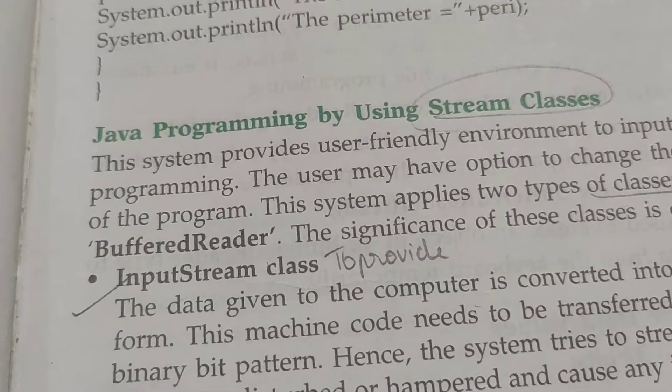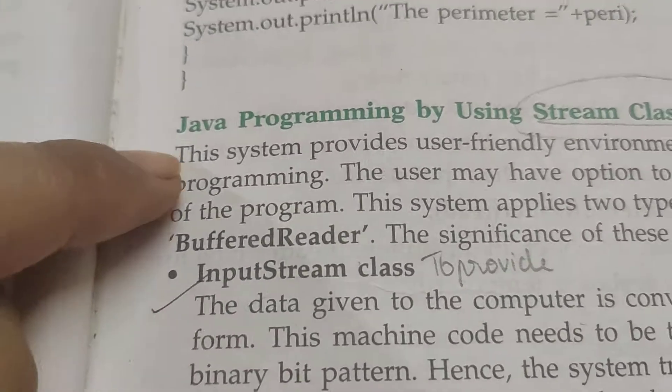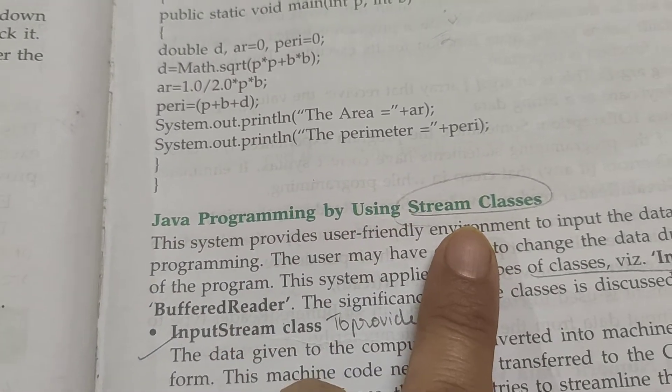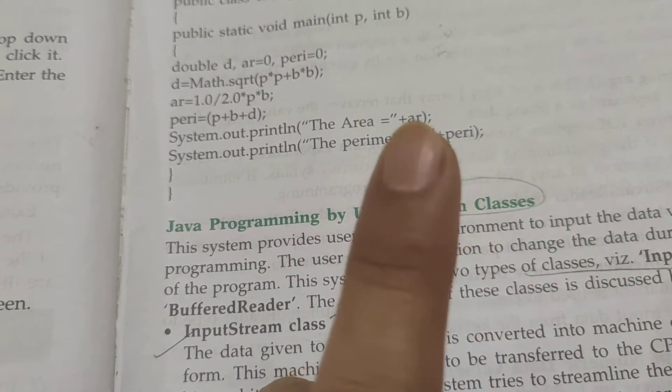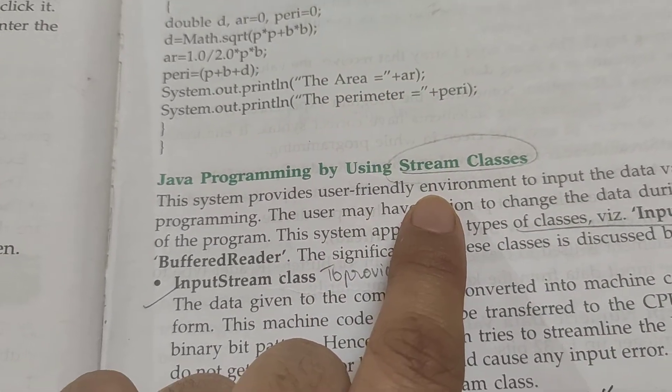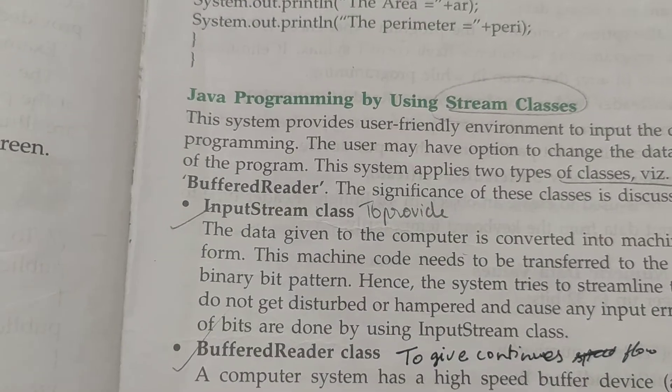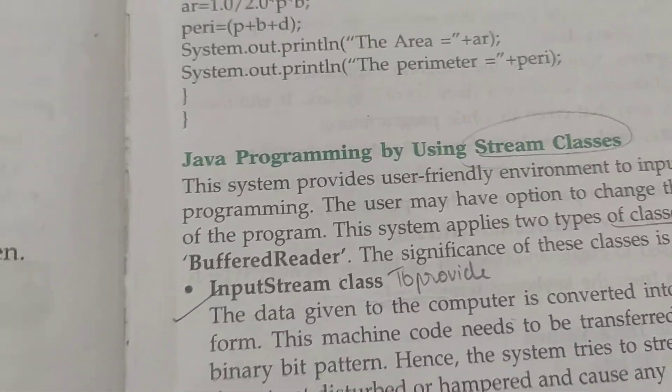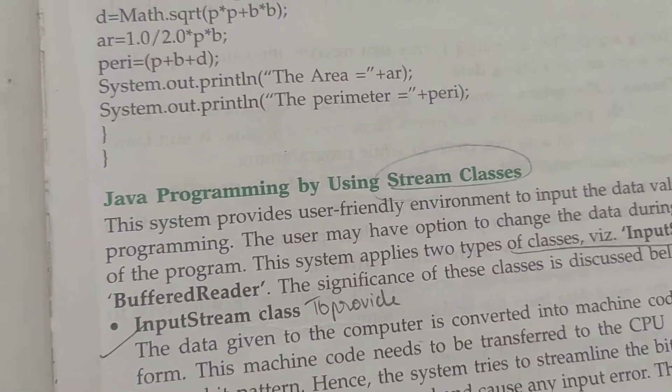Next method: we have the most important methods now. These two methods are Java programming by using stream classes. Buffer reader. Before starting the stream classes, first we have to discuss what are the streams. So we have two types of streams: input stream and output stream.